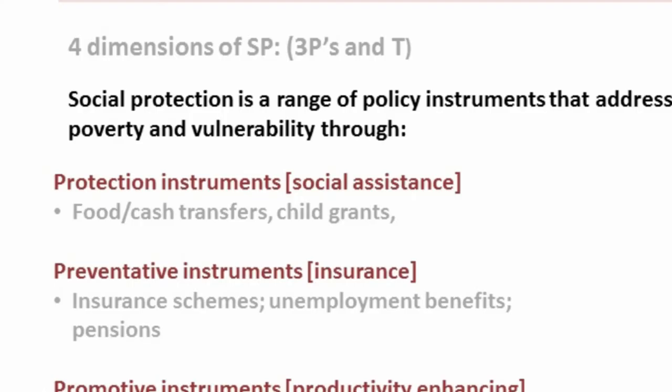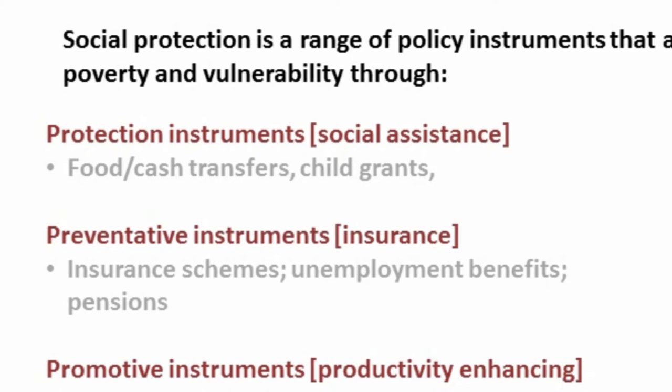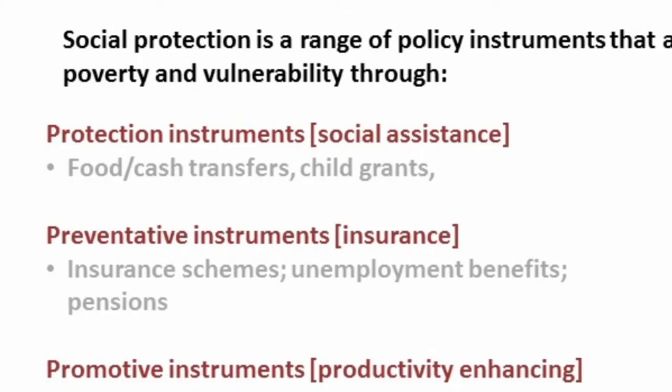The second is moving beyond poverty to issues around vulnerability — preventative instruments. You're trying to manage risk in a way that intervenes before a shock happens. It's limiting damaging coping strategies when a shock or chronic stress happens. The instruments we commonly use are insurance mechanisms: insurance schemes, health insurance, unemployment benefits, pensions, and so on.